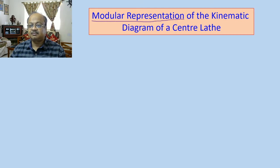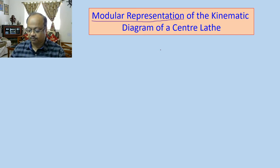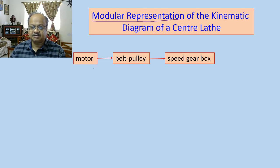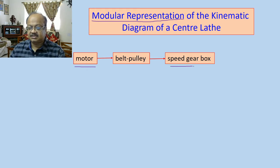The full detail diagram is already available in your class notes, so you can refer to them if you are not able to follow. The first element in the kinematic chain is the motor — the main motor of the central lathe — which is connected to the speed gearbox via a belt pulley arrangement. The belt pulley arrangement would typically increase or reduce the speed depending on the output from the speed gearbox.